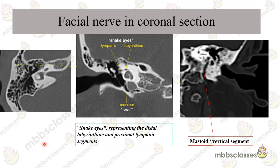When reading the coronal section, we can see both the tympanic and the labyrinthine segments of the facial nerve at the level where it is transiting from the labyrinthine to the tympanic segment. This appearance in coronal sections is also called the snake eye appearance. The cochlea appears like a snail — called the cochlear snail. The facial nerve exits out of the stylomastoid foramen as the vertical segment, and this is the route through which the facial nerve passes through the temporal bone.